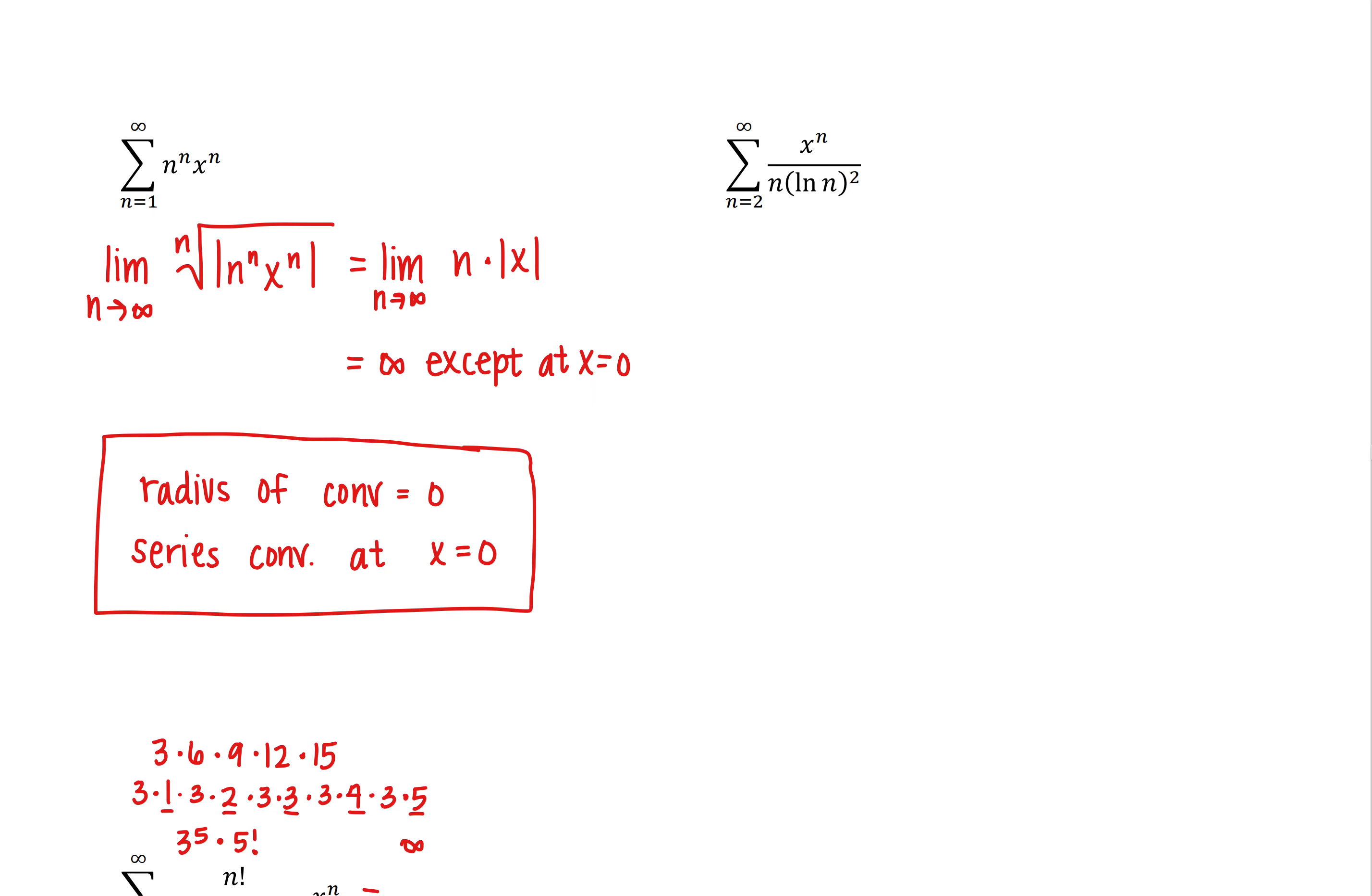We're going to look at one more of these examples here. This one is a series from n equals 2 to infinity. We've got x to the n over n times the natural log of n squared.